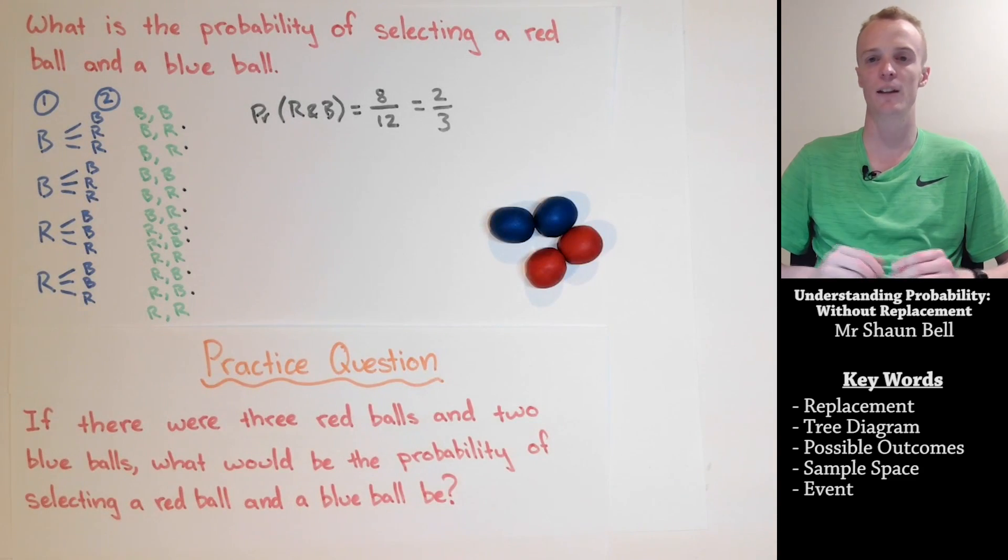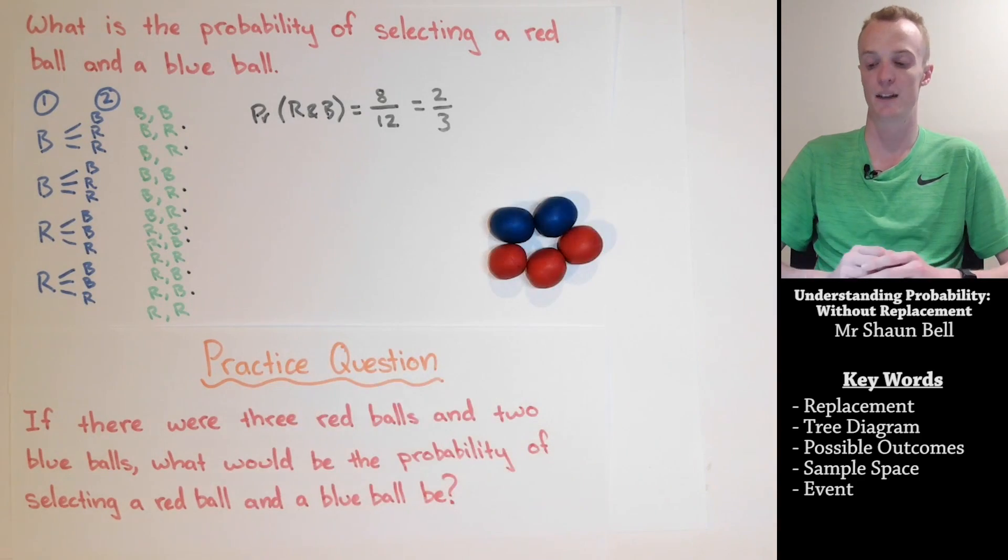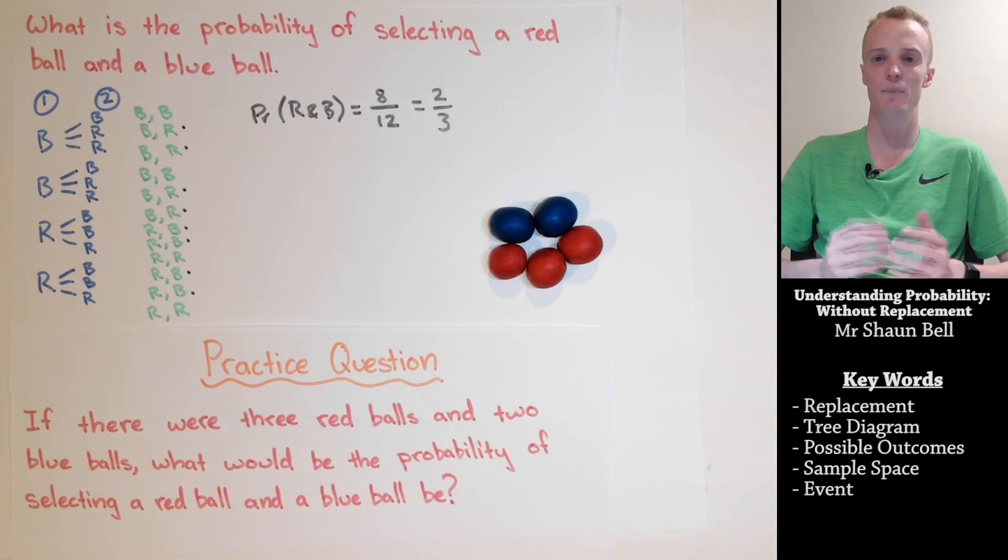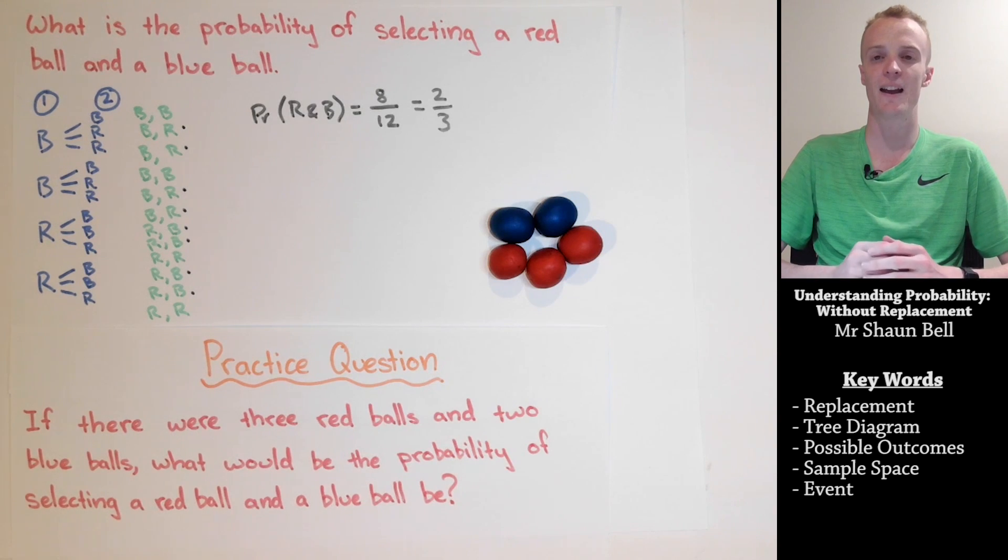So now I would like for you to give it a go. If there were 3 balls in our problem instead and we selected 1 ball at a time, selecting a total of 2 balls, what would the probability be of selecting 1 red ball and 1 blue ball once again in any order?